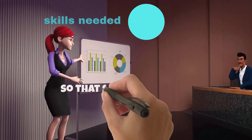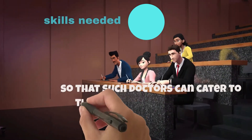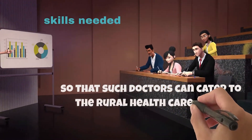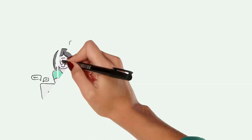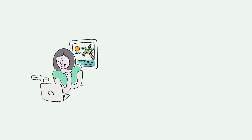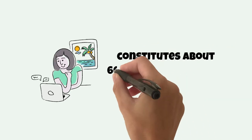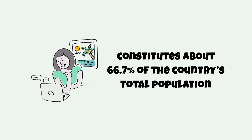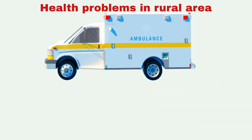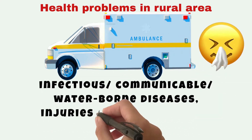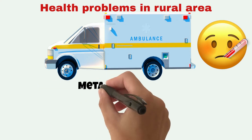Such doctors need to cater to rural healthcare needs efficiently. There are more than 6 lakh villages across 736 districts of India, where around 70% of the country's total population lives. Health problems in rural areas are mainly infectious waterborne diseases, injuries, and snake bites or insect bites.